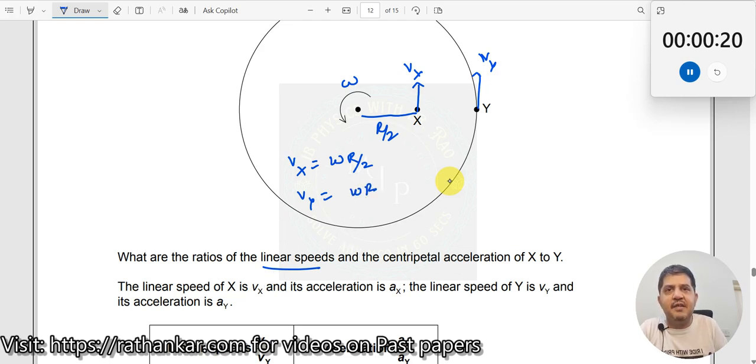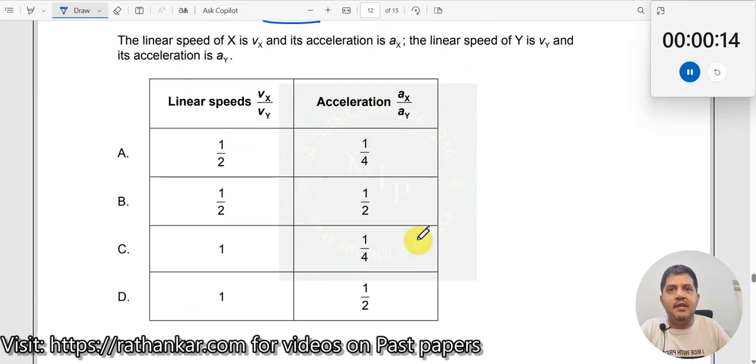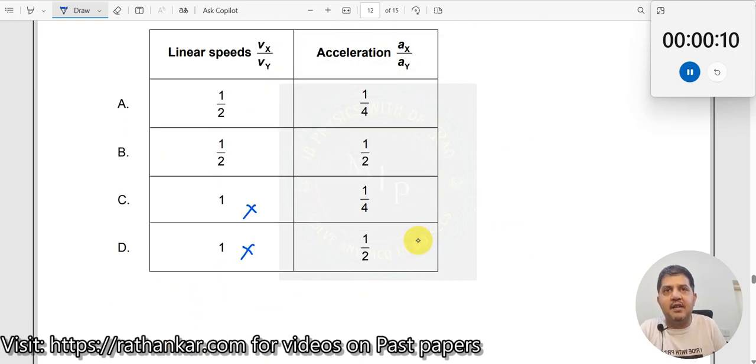The ratio means divide one by the other. When I divide, omega cancels out, so Vx/Vy equals 1/2. That means these two options are incorrect.